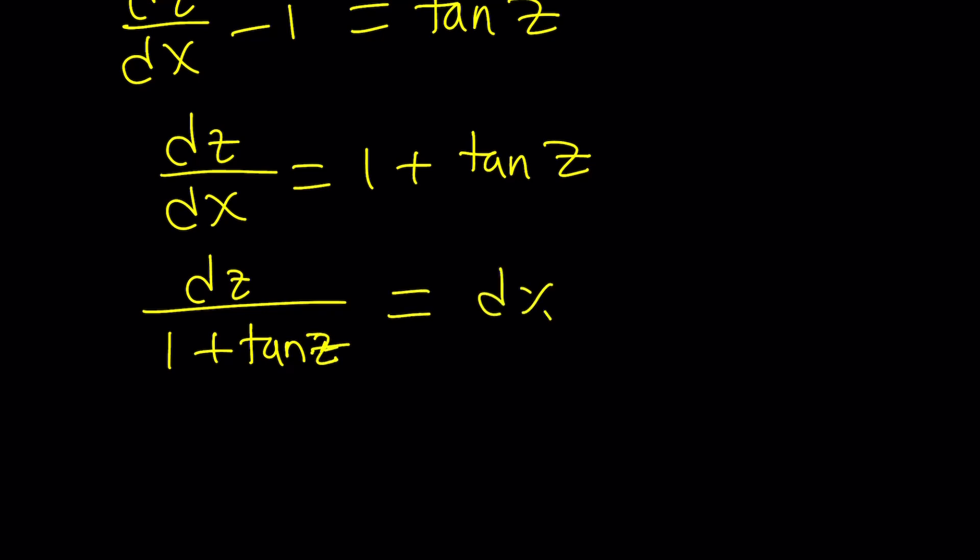Obviously the right hand side is super nice because we can just integrate it and we get x plus c from there. But on the left hand side we're going to have some complications. And that's where the three methods comes in. How do you integrate 1 over 1 plus tangent z or dz over 1 plus tangent z? So let's take a look. First method.